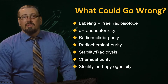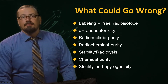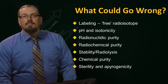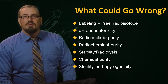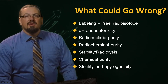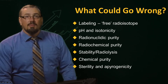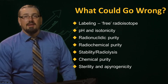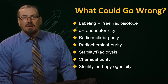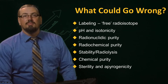So what could go wrong in the manufacture of radiopharmaceuticals? There could be poor radiolabelling of the particular pharmaceutical component resulting in free radioisotope, which can adversely affect the usefulness of the preparation. The pH or acidity, along with the isotonicity or ionic strength of the radiopharmaceutical, may be incorrect, causing problems to the patient during administration.